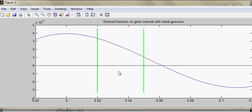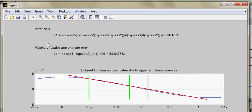This figure shows the entered function on a given interval with the initial guesses. In this figure, the iteration 1 is plotted and it will give the values. The absolute relative approximation error will be somewhat like 68.64% in the first iteration.